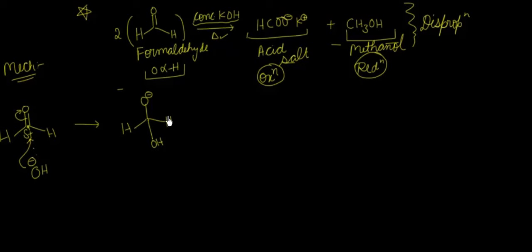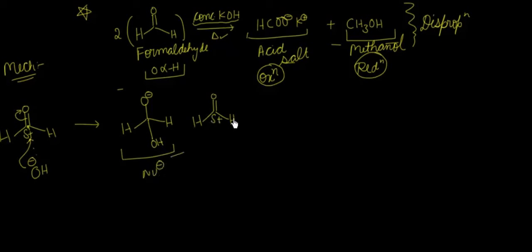अब यह जो intermediate बना, इसकी reaction होगी formaldehyde के साथ। यह जो पूरा species है, it will act as a nucleophile, जो यहां पे electrophile पे attack करेगा। अब electrophile पे attack कैसे करेगा — तो O minus के पास दो रस्ते हैं। एक possibility यह है कि O minus, electrophilic carbon को electron directly दे दे, पर अगर directly देगा तो जो product बनेगा वो stable नहीं होगा। तो this is not the possibility।